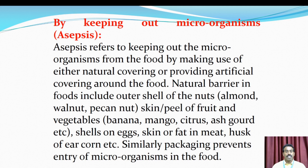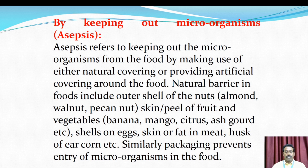By keeping out microorganisms — asepsis refers to keeping out microorganisms from food by making use of either natural coverings or providing artificial coverings around foods. Natural barriers in foods include the outer shells of nuts such as almonds, walnuts, and pecan nuts; the skin or peels of fruits and vegetables such as banana, mango, citrus; shells on eggs; skin or fat in meat; husk of corn; and similarly, packaging for prevention of microorganisms in food.